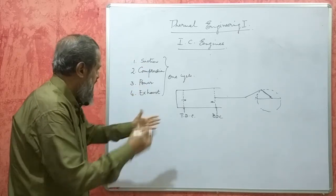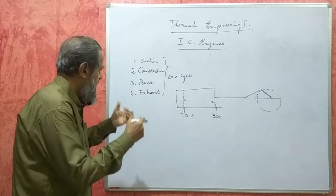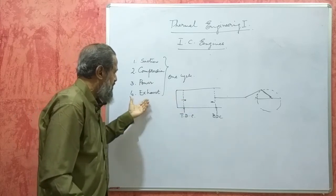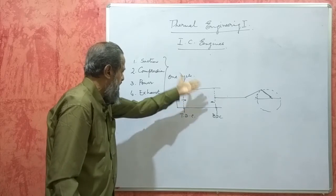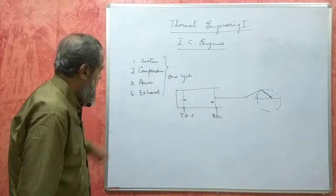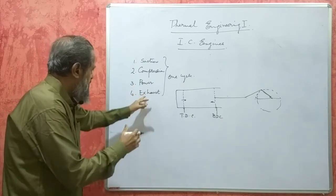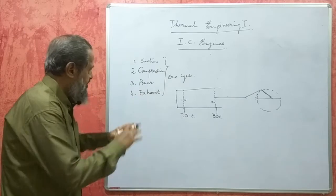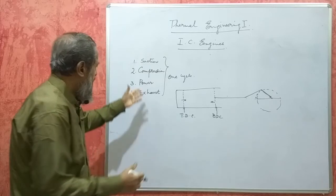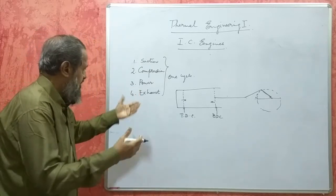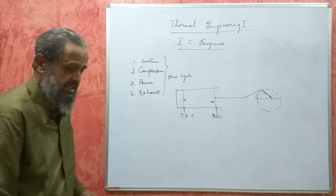Scavenging or removal of burnt gases is better achieved in the four-stroke engine, whereas it is not achieved as well in the two-stroke engine, where suction and exhaust take place simultaneously. However, for the same size, a two-stroke engine produces almost double the power of a four-stroke engine. These are the comparisons between two-stroke and four-stroke IC engines.